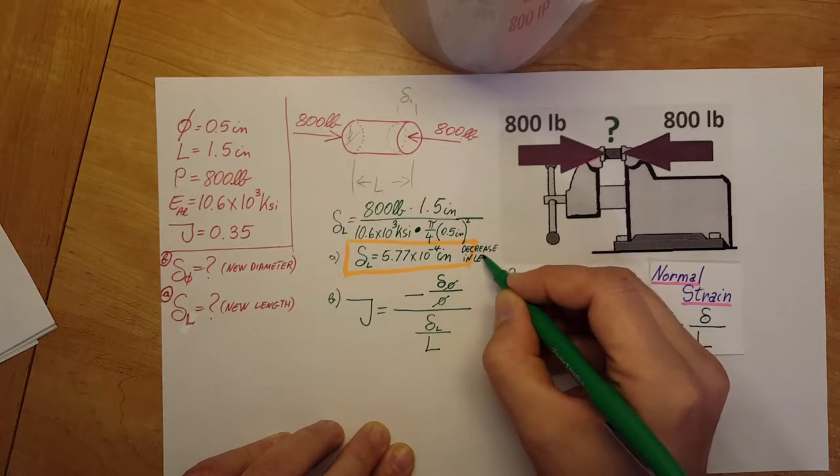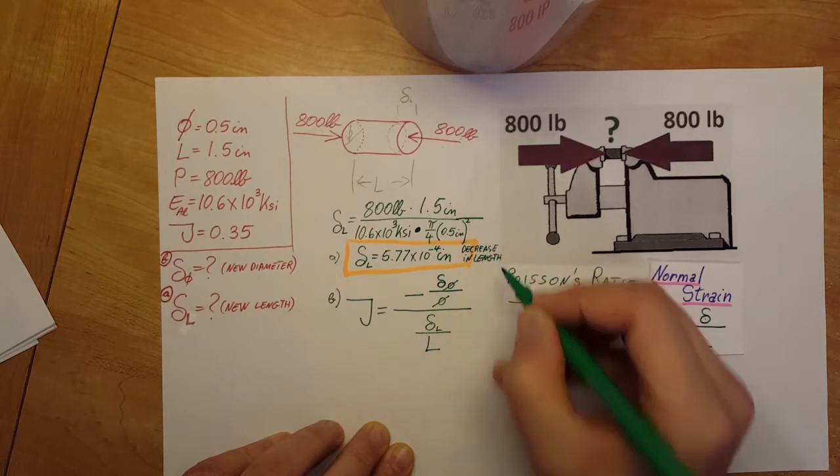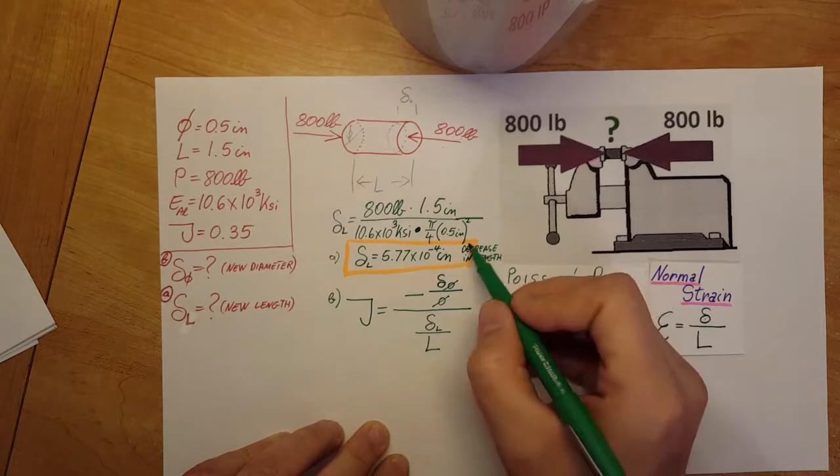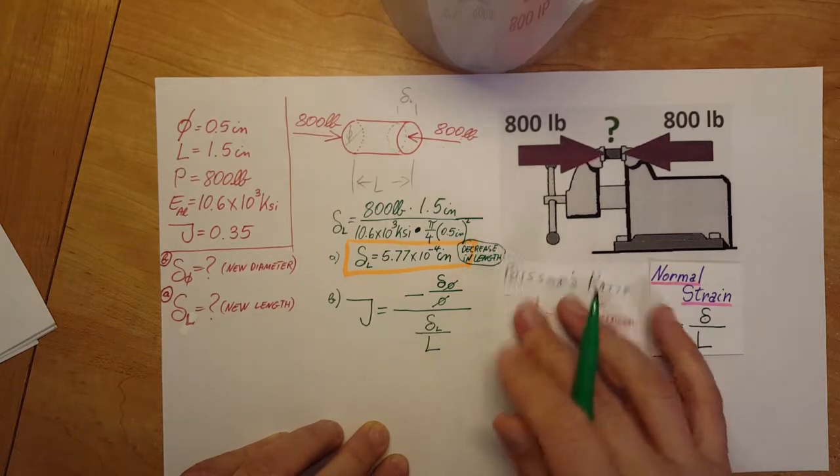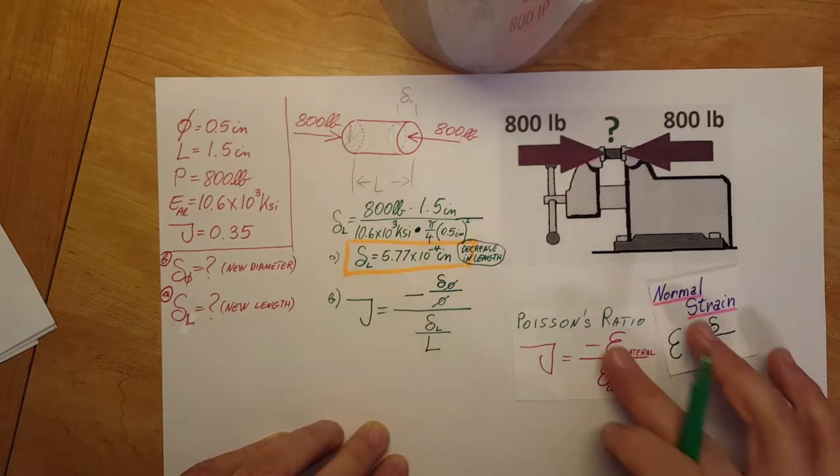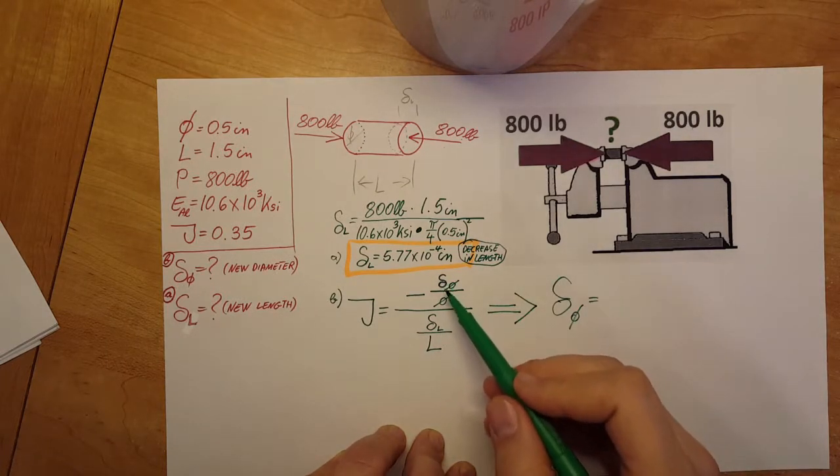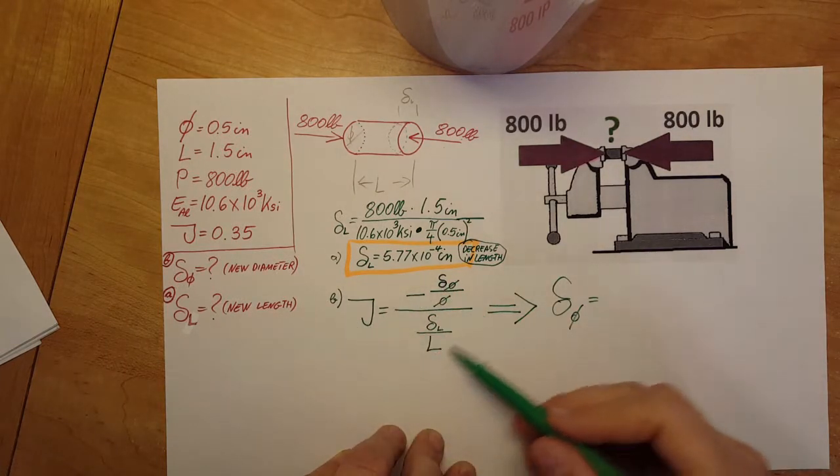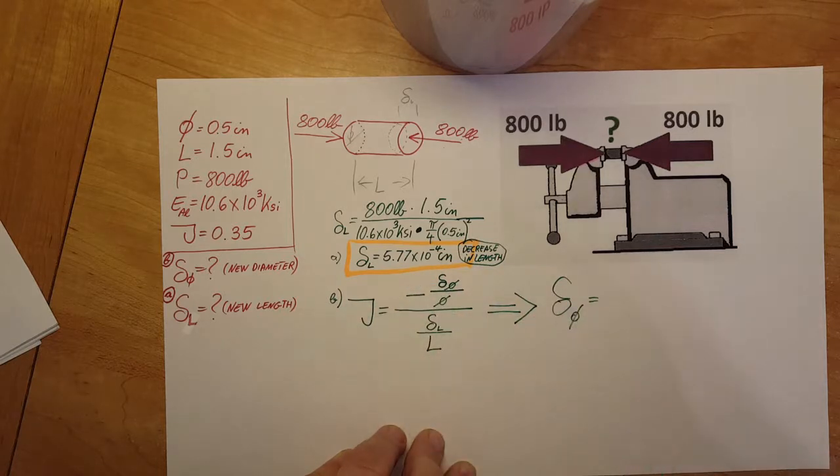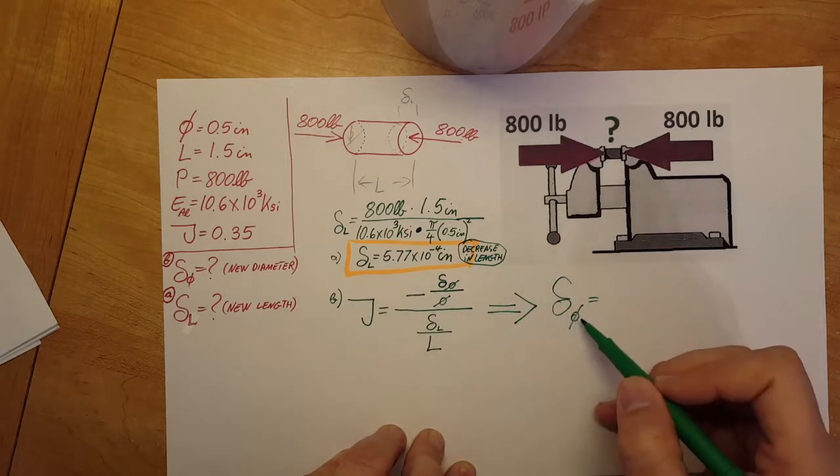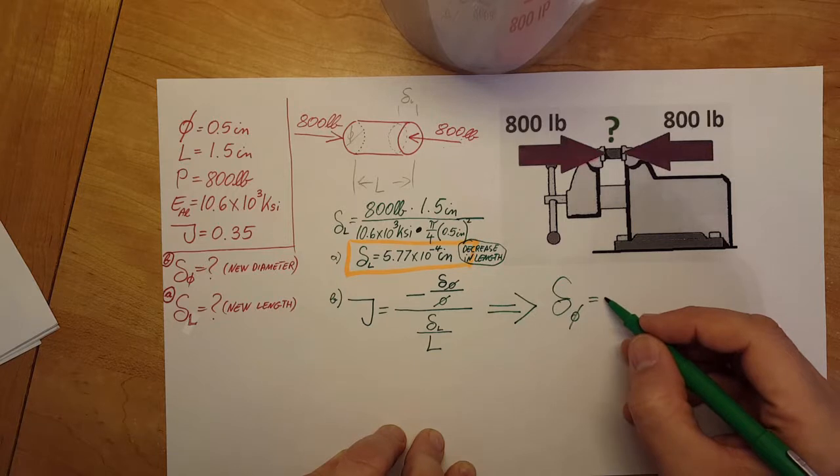Now I'm going to go ahead and solve for the change in diameter from this equation, and we're going to find that the change in diameter is equal to the negative of the original diameter times the change in length times Poisson's ratio over the original length.